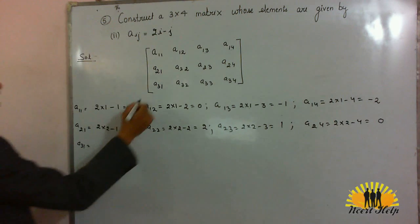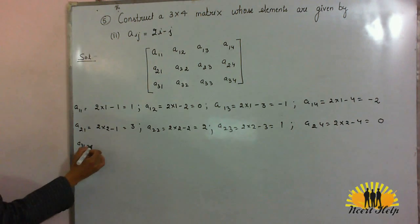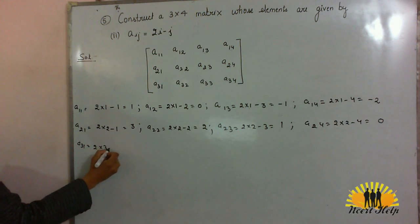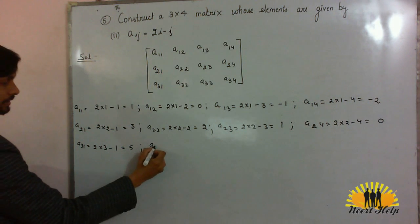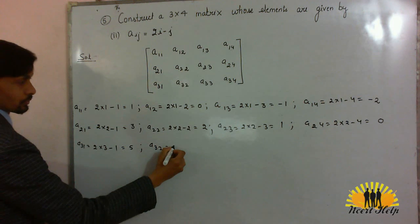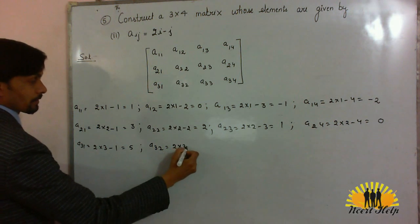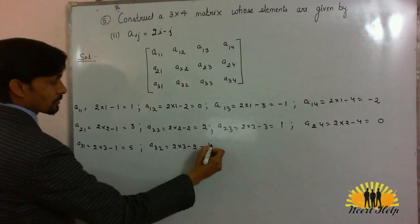A31, now take the third row. A31 will be 2 into i minus j. 6 minus 1, 5. A32, 2 into 3 minus 2. 6 minus 2 is 4.